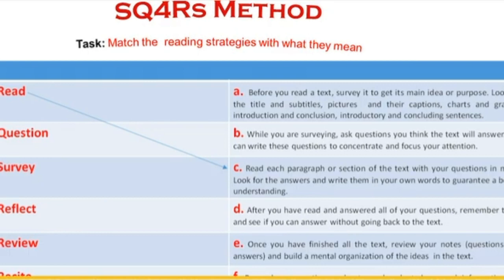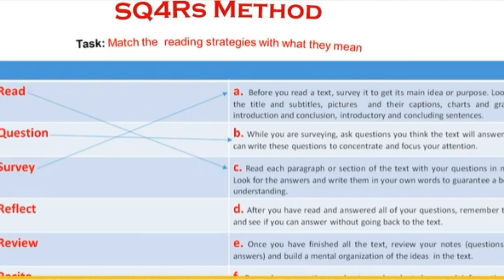Reading strategy number two is Question. Question refers to the idea that while you are surveying, you ask questions you think the text will answer — you can write these questions to concentrate and focus your attention. Reading strategy number three is Survey. Survey refers to the idea that before you read the text, you survey it to get its main idea. Look for the title and subtitles, pictures and captions, charts and graphs, and the introduction and conclusion.